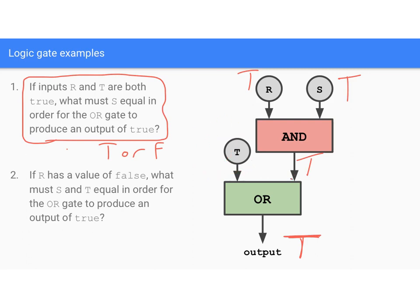Now let's look at the next question. If R has a value of false, what must S and T equal for the OR gate to produce an output of true? If T were false, the AND gate would return false, and with T also false, the OR gate would return false — so that's bad.